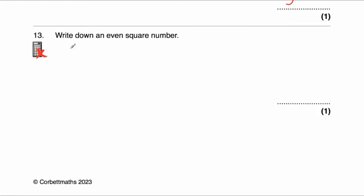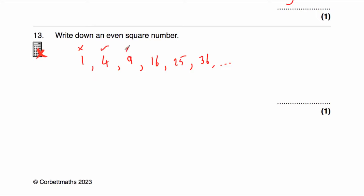Question number 13 says: write down an even square number. The square numbers are 1, 4, 9, 16, 25, 36, and so on, found by multiplying numbers by themselves. We want an even square number, so we can't write down 1 or 9 (odd), but we could write down 4, 16, 36, or 100. Any even square number is acceptable.